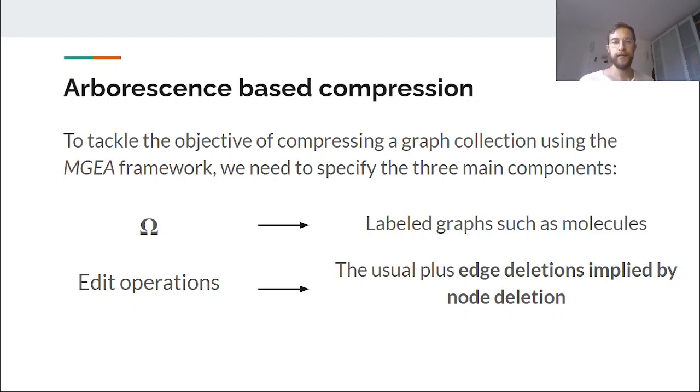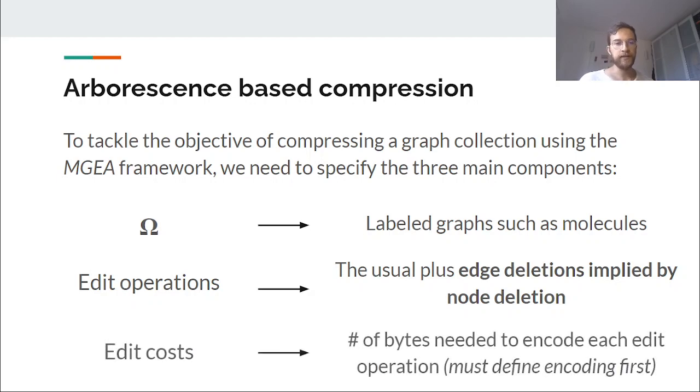Plus something we will call implied edge deletions. I will talk about that later more in detail. And in terms of costs, we aimed at creating some edit costs that represented our real objective function. So we want to compress graphs. And therefore we want to minimize the number of bytes used to encode every graph. So we formulated some edit costs that will make the cost of an edit path equal or related to the number of bytes needed to encode it in a file using an encoding that we defined.